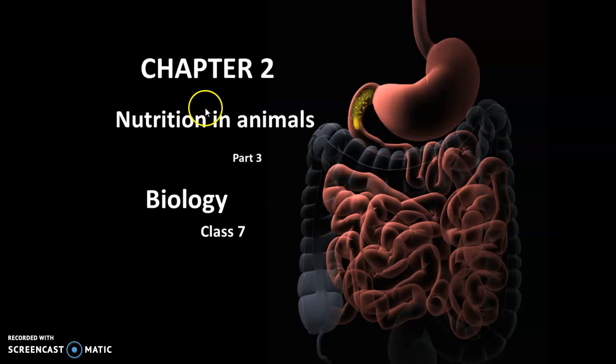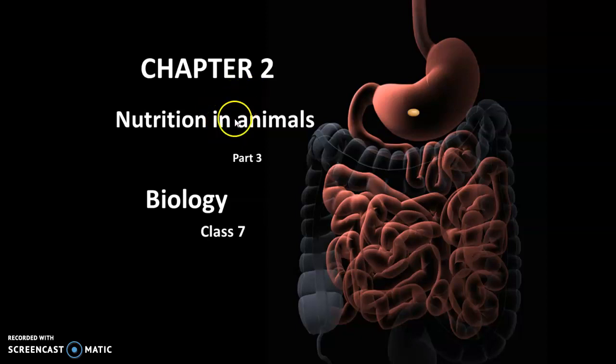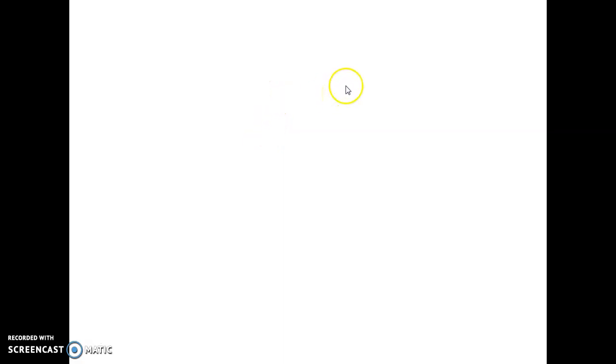Welcome back students. Today we will see another topic of nutrition in animals, that is chapter 2 part 3 biology for class 7. In the previous video we have seen the nutrition in animals in which we learned the ingestion process. Today we will start digestion.